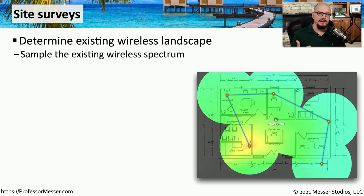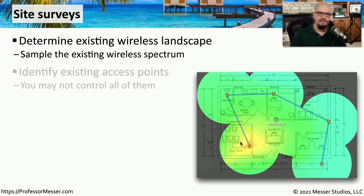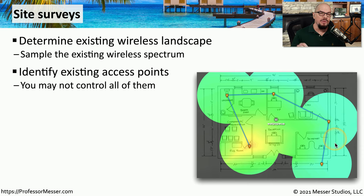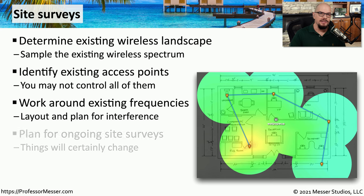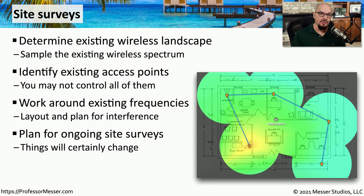This is where a site survey can be very useful. You walk around a particular area and see exactly what wireless signals you're seeing in different parts of the building. This lets you identify all access points in your area, even those from different companies in nearby buildings, and see what frequencies are in use so you can make changes to avoid third-party interference. Since you can't predict what might change with wireless networks outside your control, consider having ongoing site surveys to ensure nothing has changed and to identify any needed adjustments.